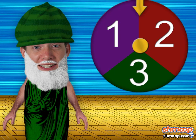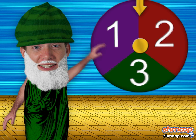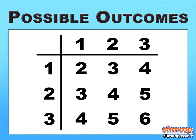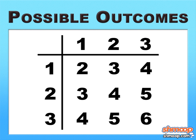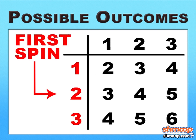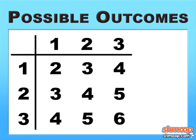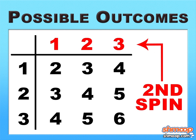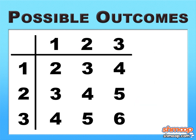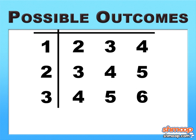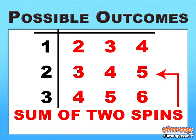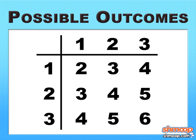As the audience cheers you on, let's give this problem a spin. Here's a chart of the possible outcomes. The numbers down the side show up on the first spin. The numbers across the top show up on the second spin. The numbers in the table show the sum of the two spins. Nowhere in there is your new car — don't get your hopes up.